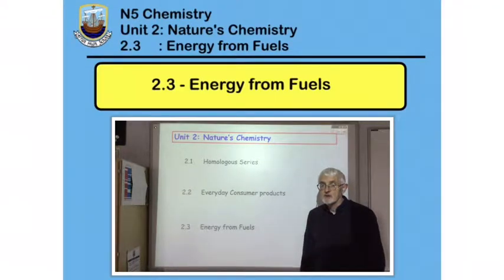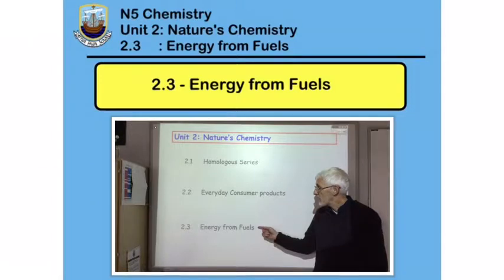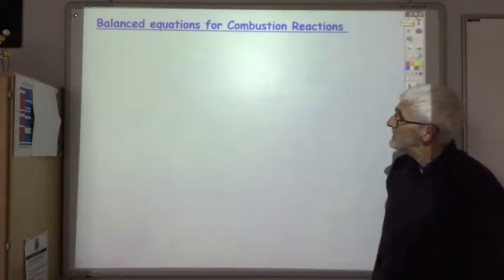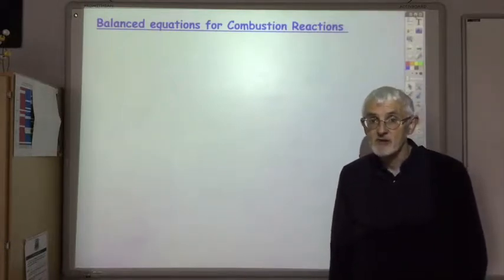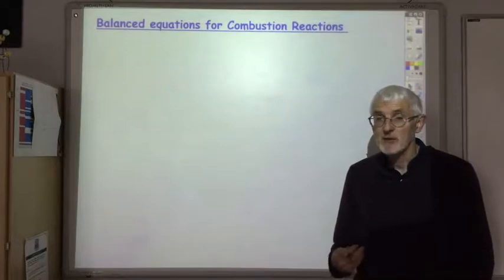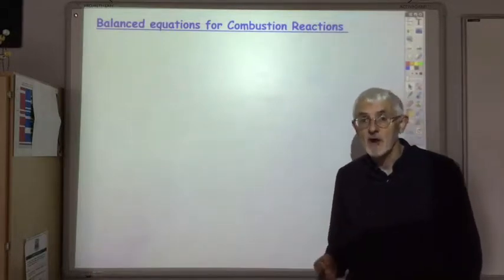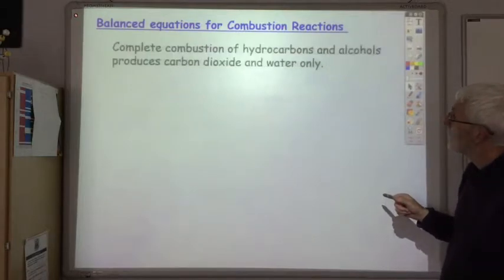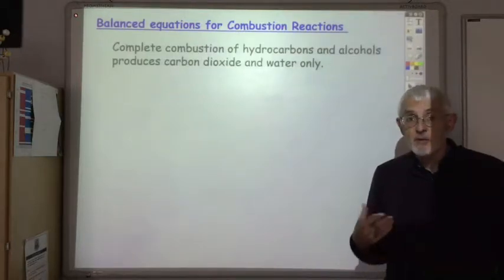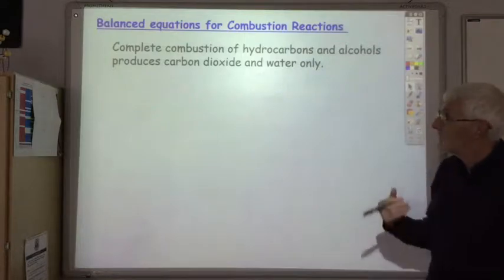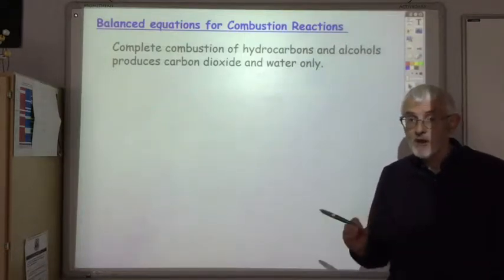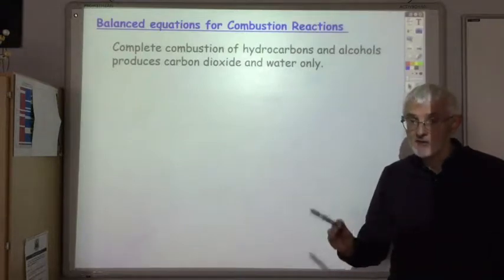In the last video for section 2, we're going to look at energy from fuels. First thing we have to do is work out balanced equations for the combustion reactions. Here we're talking about the combustion of hydrocarbons or alcohols. The equation is for the complete combustion, and when you get complete combustion of a hydrocarbon or alcohol, all the carbon turns to carbon dioxide, all the hydrogens turn to water.